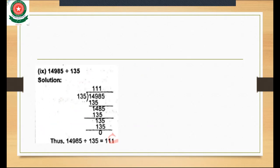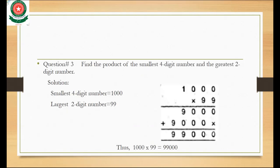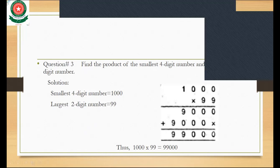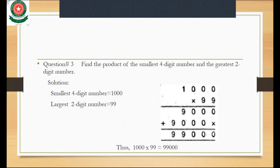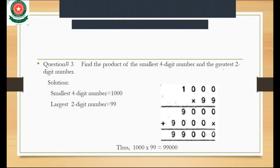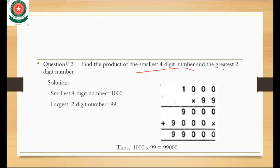Question number 3: Find the product of the smallest four-digit number and the greatest two-digit number. We will do this the same way as in previous lectures. The smallest four-digit number is 1000.